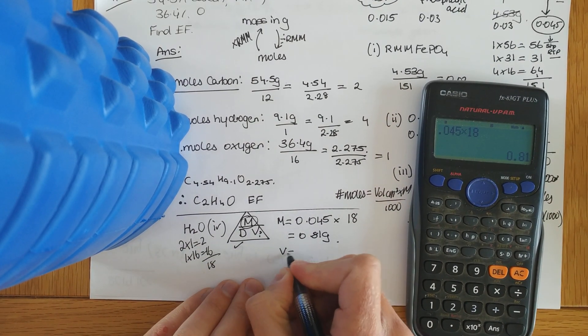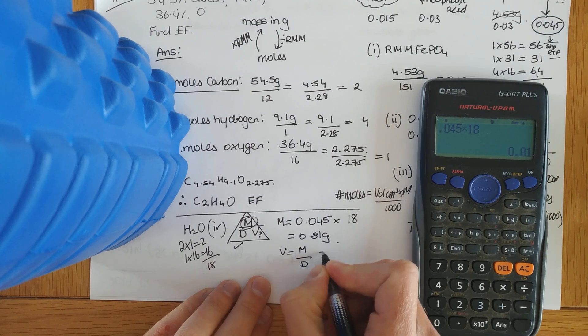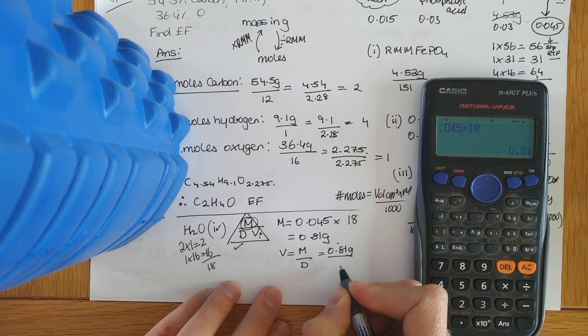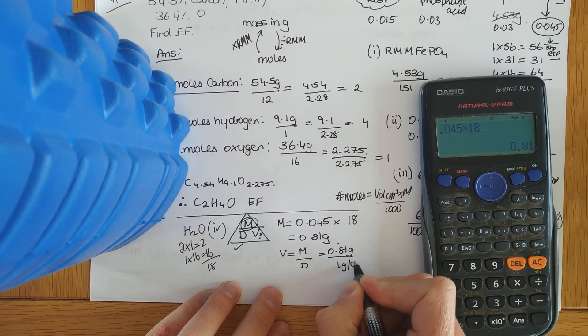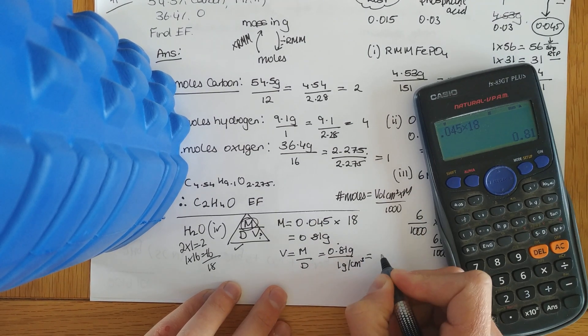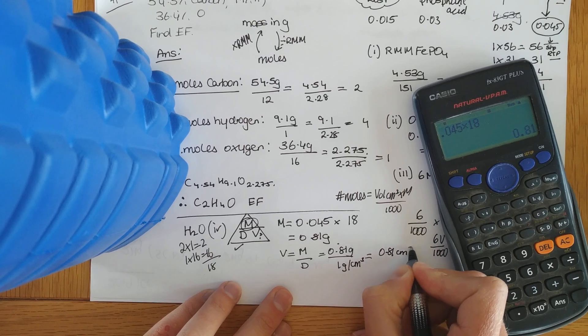They've asked me for the volume. Volume is mass over density. So, 0.81 grams over the density there, which is 1 gram per centimeter cubed. So, the volume is 0.81 centimeters cubed.